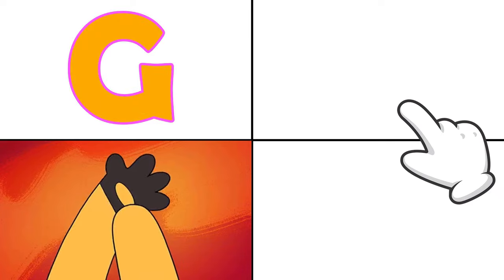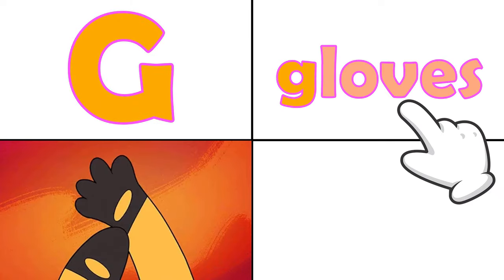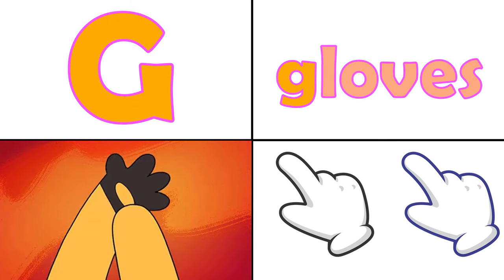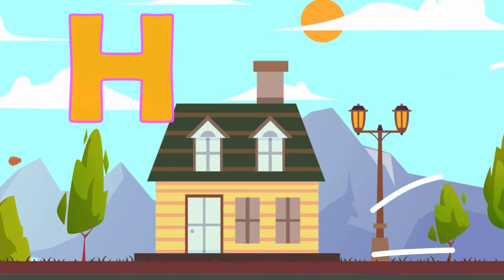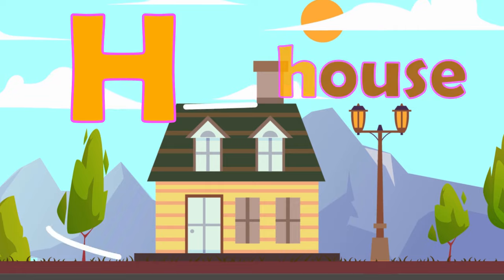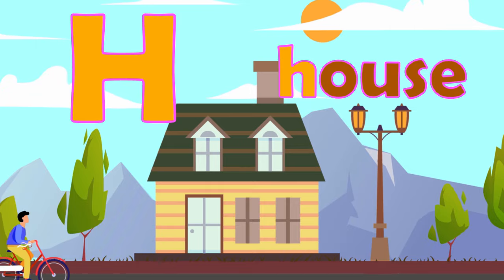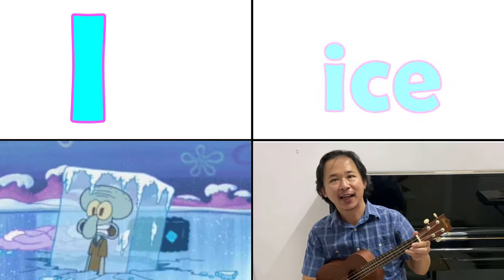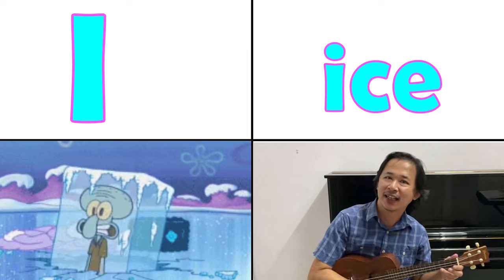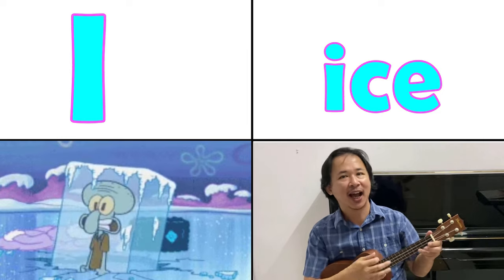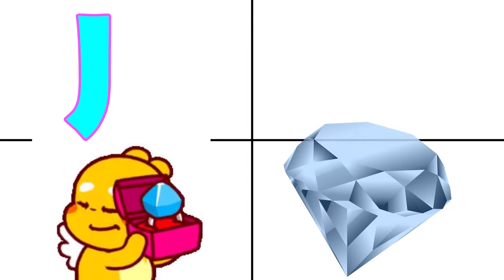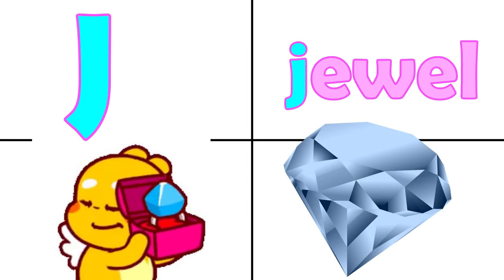G is for gloves, g. H is for house, h. I is for ice, i.